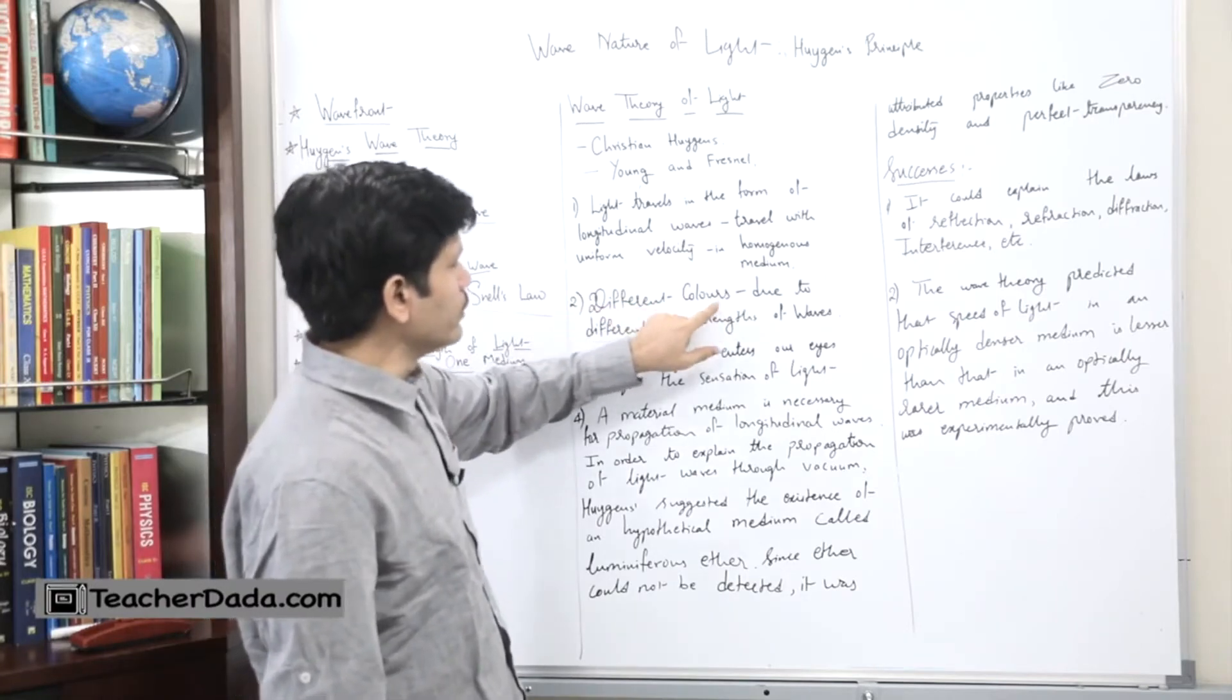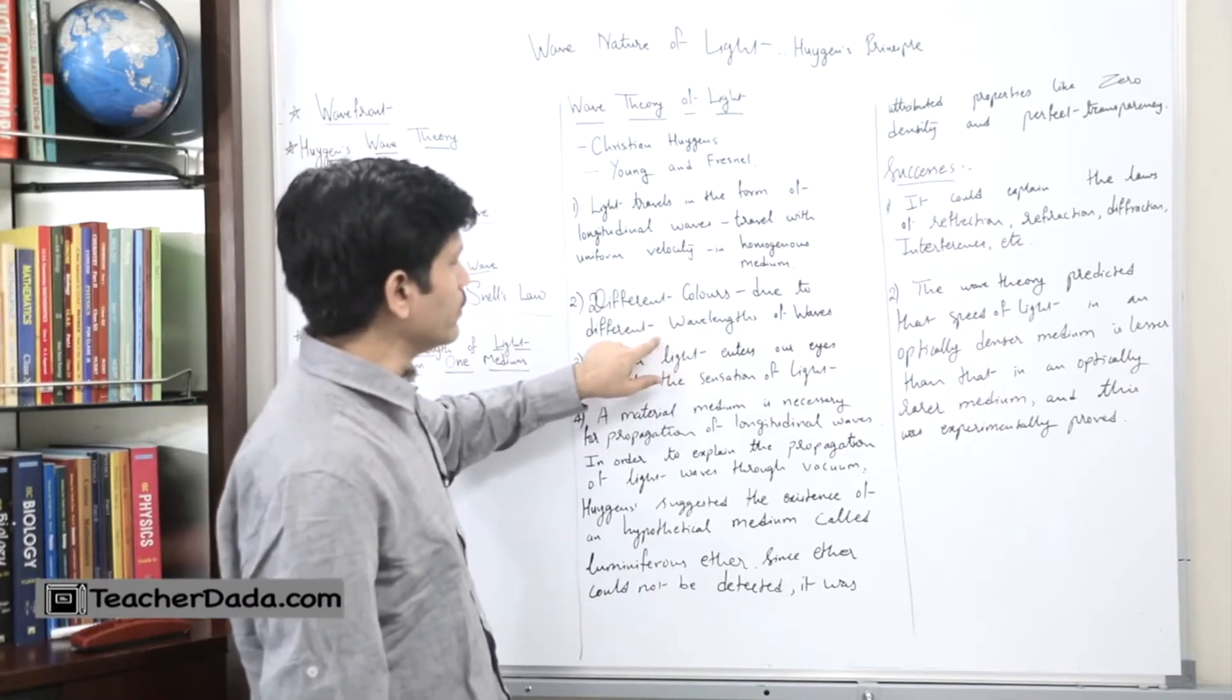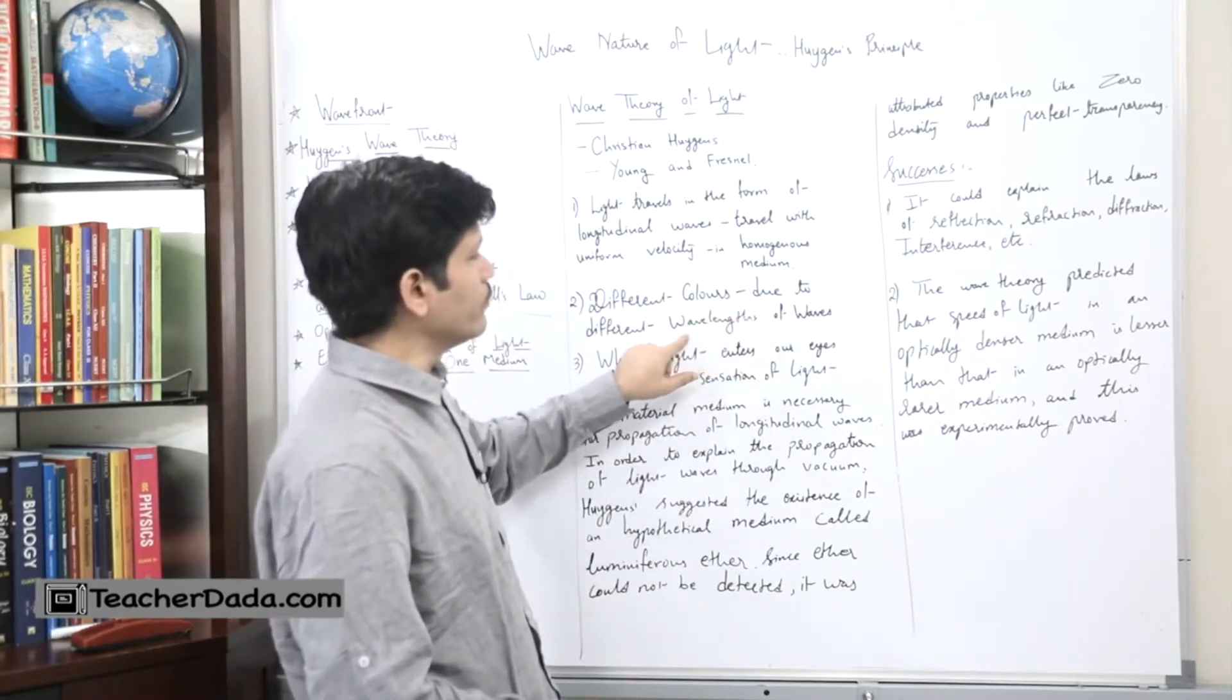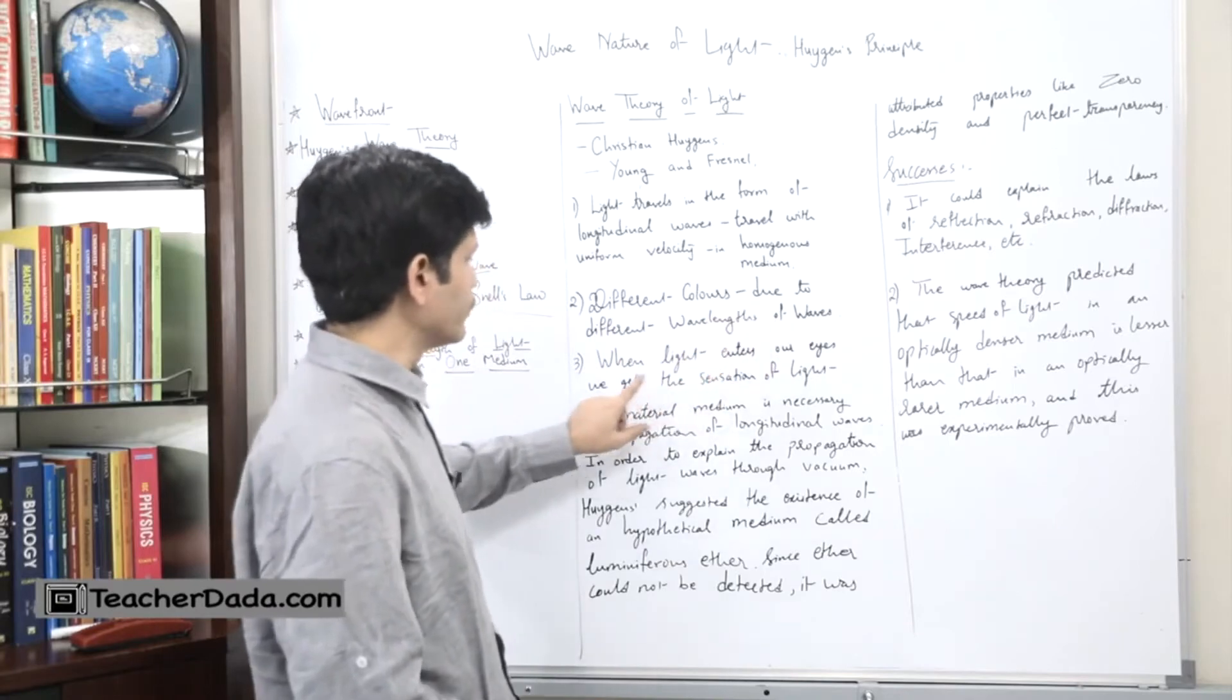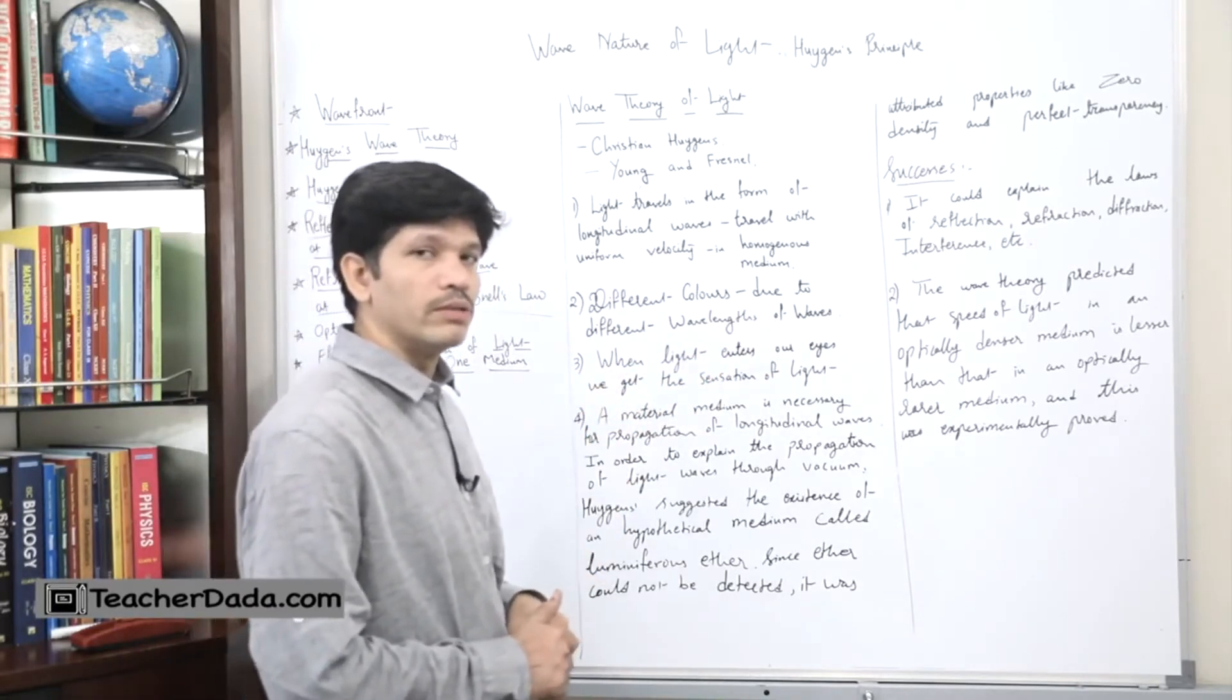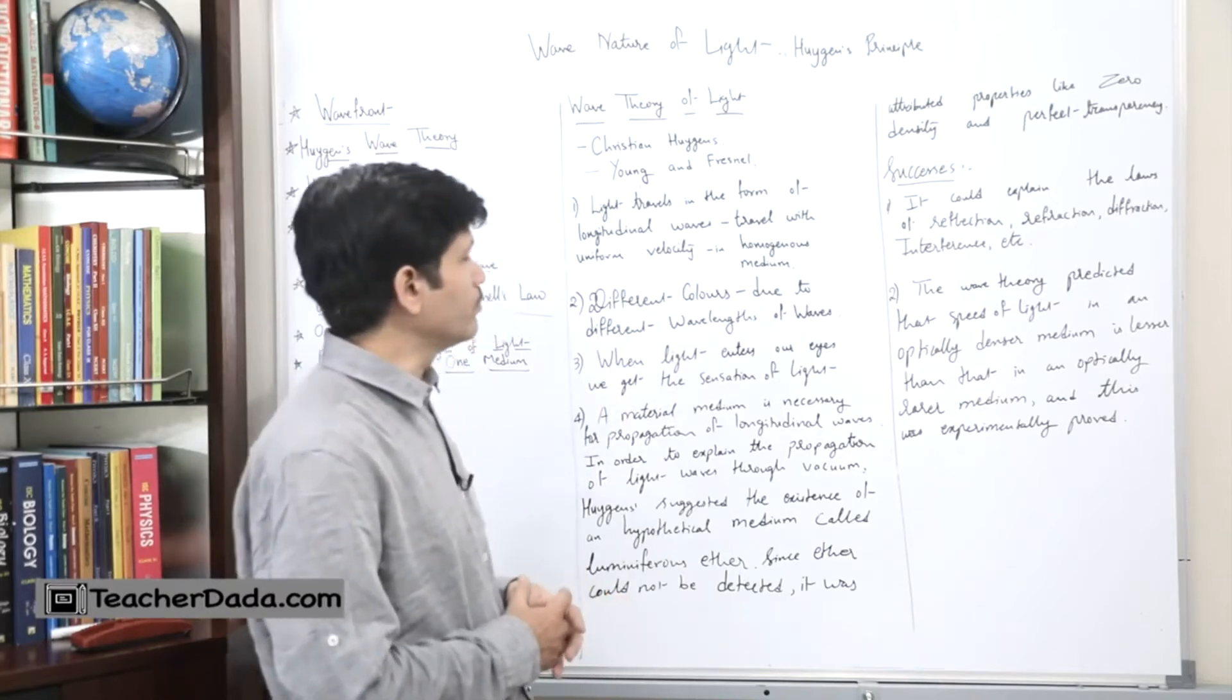Second, different colors are due to different wavelengths of light waves. Different wavelengths are the main reason, the main cause, for the different colors of light.